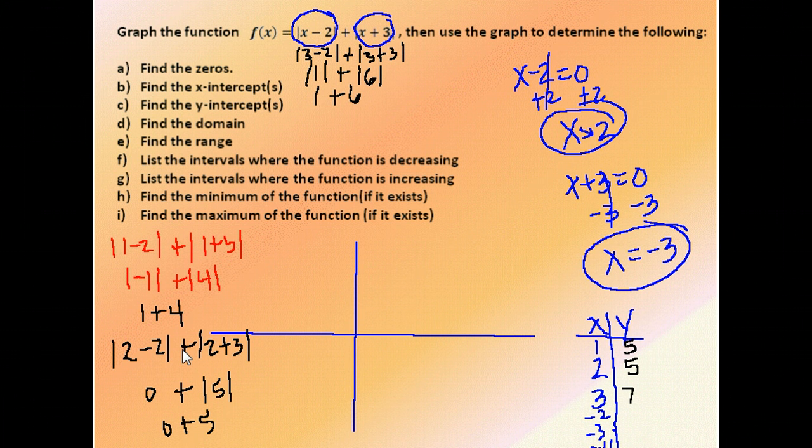So we go negative 2 minus 2, negative 2 plus 3. Take the absolute value of those. Absolute value of negative 4 is positive 4. Absolute value of 1 is 1, and I end up with 5 here. And let's see what happens at negative 3. We have negative 3 minus 2 and negative 3 plus 3. That gives me 0. Negative 3 plus 2 is negative 5. The absolute value of negative 5 is 5.